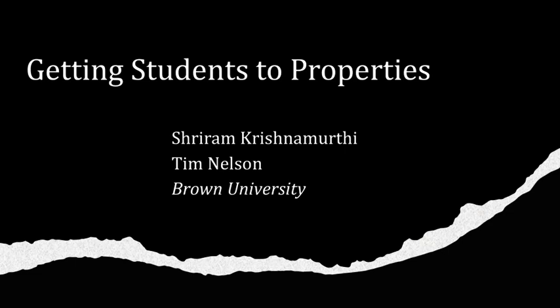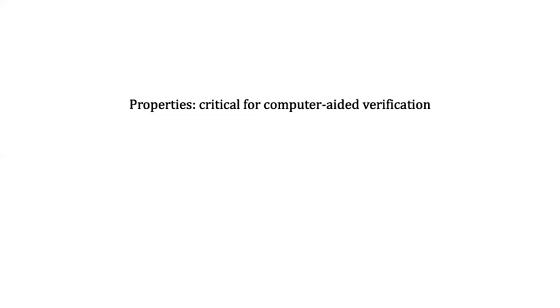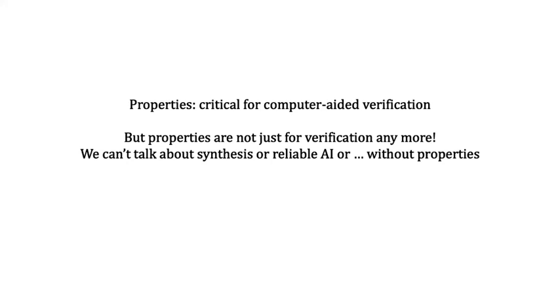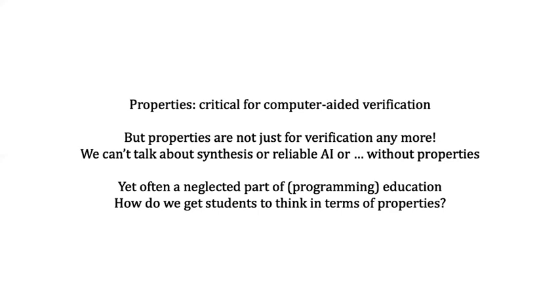I want to talk about something that is very fundamental to formal methods, which is the notion of a property. We all know that properties are critical for things like verification — if you don't have a property, what are you even going to verify? Properties are only becoming more and more important. We have an increasing set of synthesis tools, questions around reliability of AI systems, and all kinds of important questions that depend on having properties. Yet for many of us, properties have been a neglected part of programming education. An important question for me is: how do we get students to think in terms of properties?